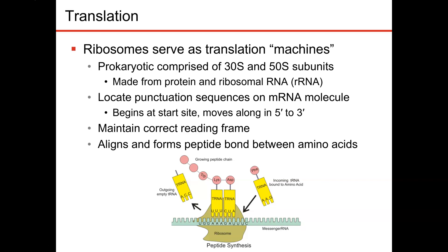Ribosomes serve as your translators — they are the cellular machinery for protein synthesis. Prokaryotic ribosomes consist of 30S and 50S subunits, whereas eukaryotic ribosomes consist of 60S and 40S subunits. So you have a large and a small subunit.